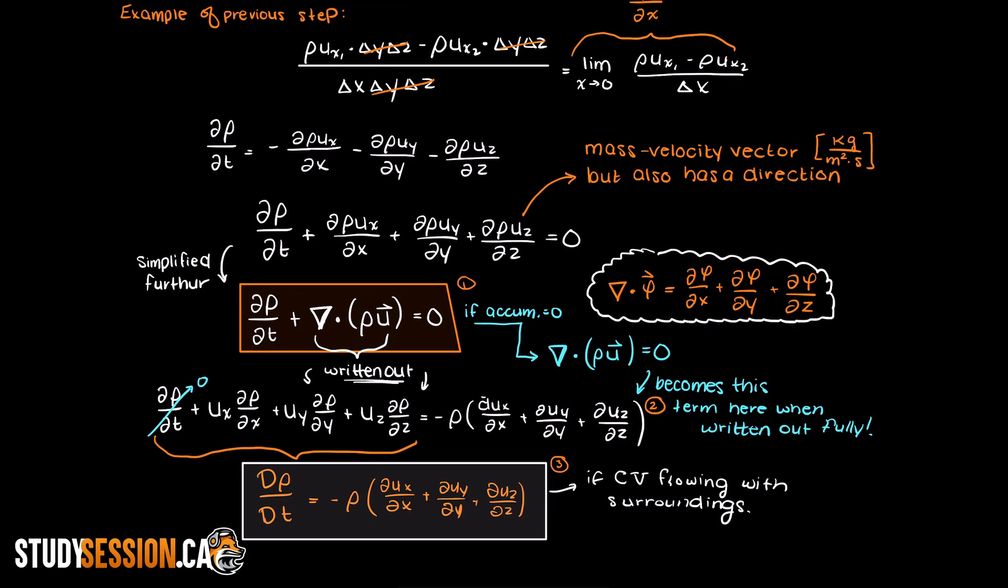Just as a final note, we typically use these rectangular coordinates for one dimensional problems. In the following two videos, we will go through the derivation of the continuity equation for both cylindrical and spherical coordinates. Cylindrical coordinates are commonly used for 2D problems and lastly, spherical coordinates are used mostly for 3D problems.